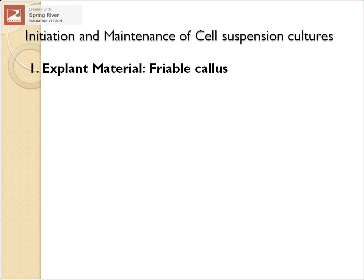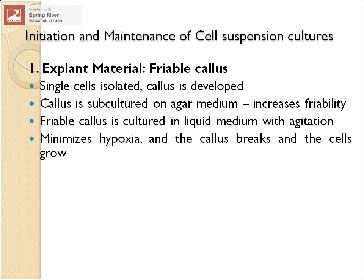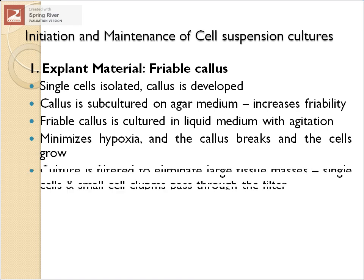For initiation and maintenance of cell suspension cultures, the explant material selected is a friable callus, because it easily breaks apart when placed into liquid medium. Single cells are isolated by different methods — mechanical, enzymatic, etc. The callus is rapidly subcultured on agar medium to increase friability, then this friable callus is cultured in liquid medium with continuous agitation. Continuous agitation causes the callus to hit the walls of the flask, breaking down into single cells, and also minimizes hypoxia — the reduction in oxygen concentration.